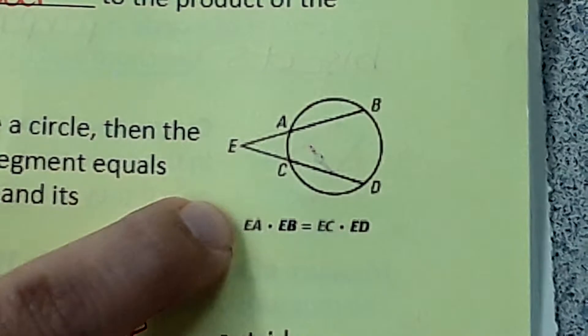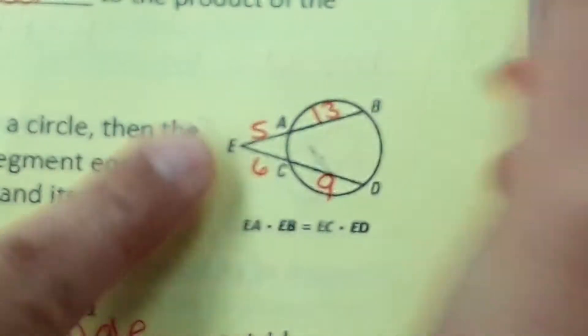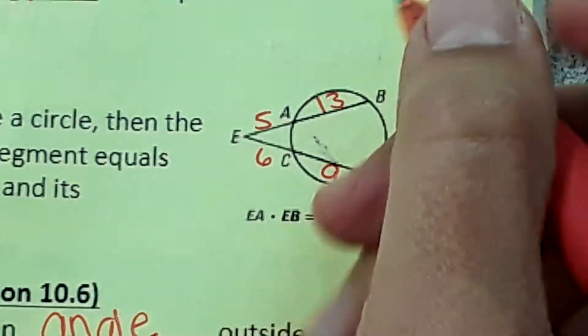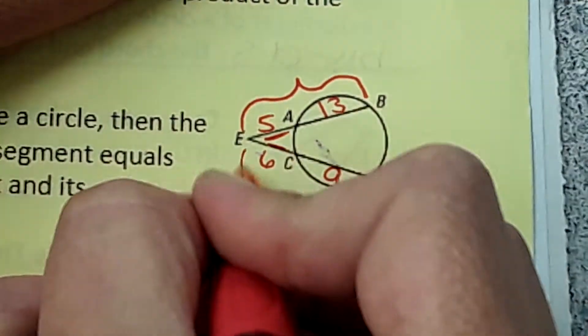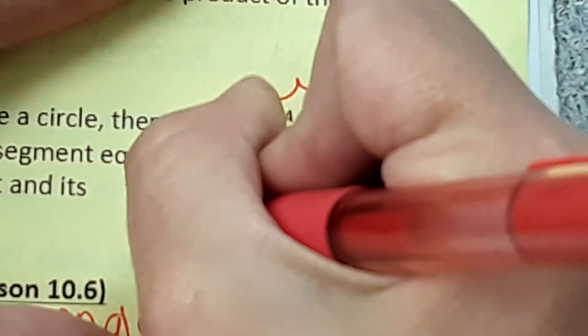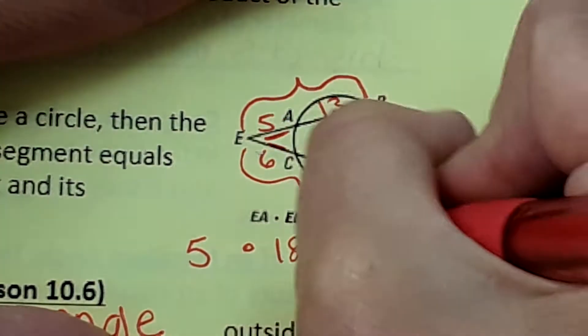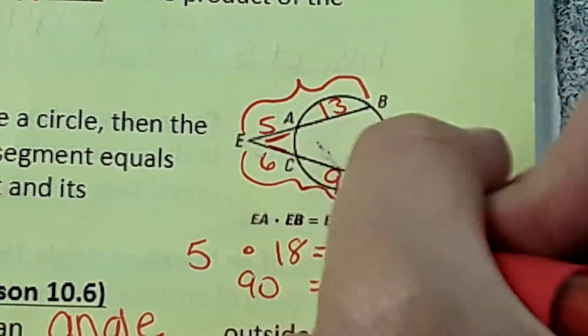It has an equation right here. I'm going to fill in some numbers. Let's make this 5 and 13, 6 and 9. We're going to multiply this segment by the entire length and this segment by the entire length. So it'll be 5 times 18 because 5 plus 13 is 18, and then 6 times 15. 5 times 18 is 90 and 6 times 15 is 90.